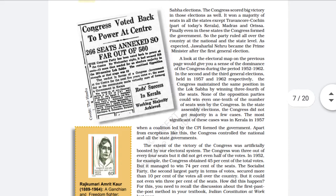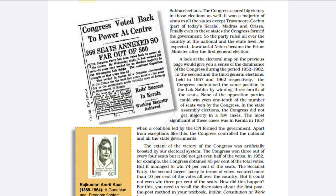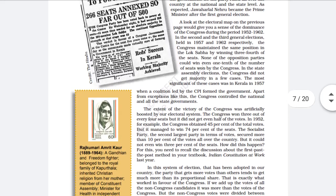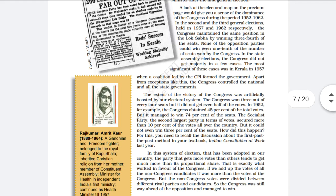As the map shows, in the election of 1957, Congress was defeated in the region of Kerala. In Kerala, the CPI — Communist Party of India — formed its government and registered victory. It is said that Kerala was the first state in the world where a Communist Party government was formed through democratic elections.